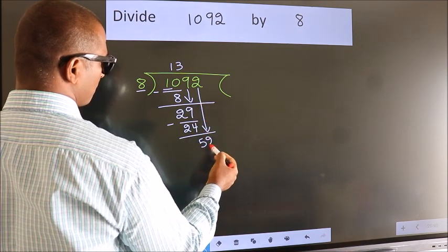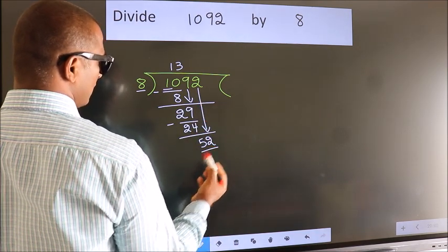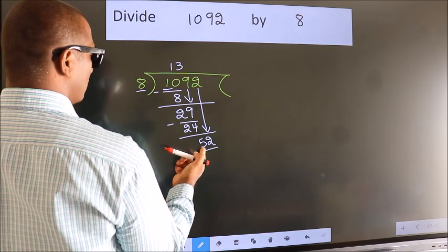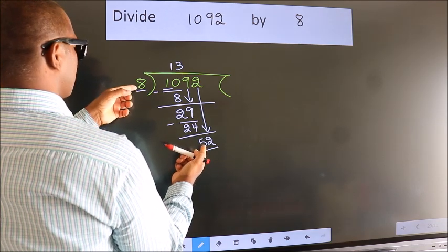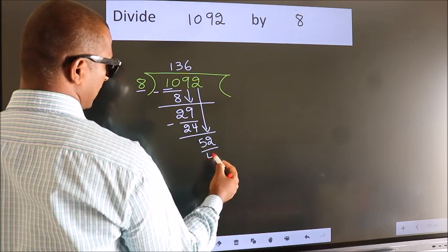So, 2 down. So, 52. A number close to 52 in the 8 table is 8 times 6, 48.